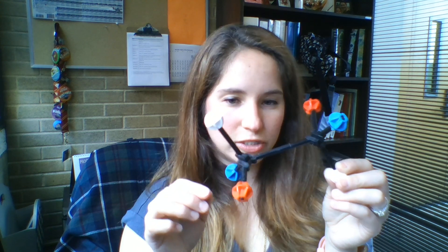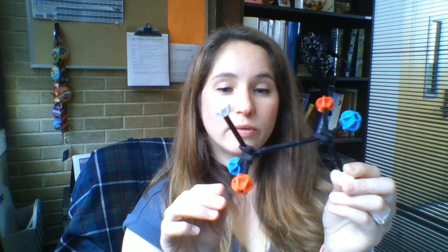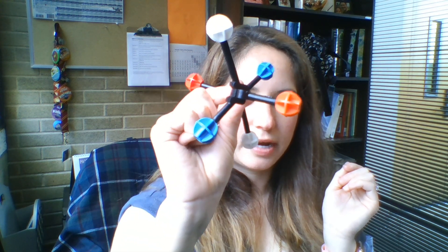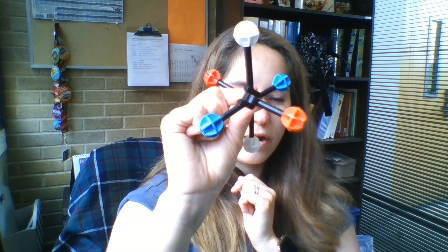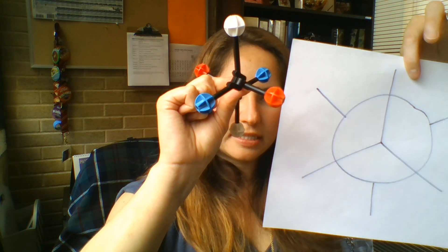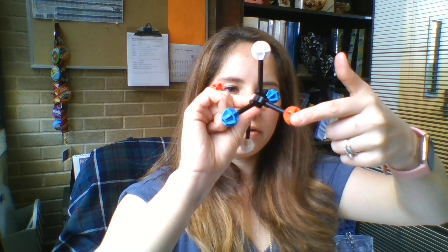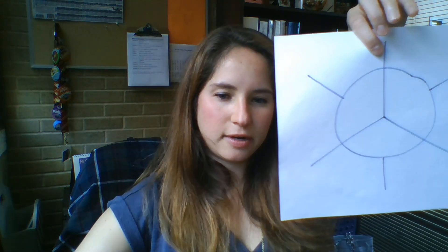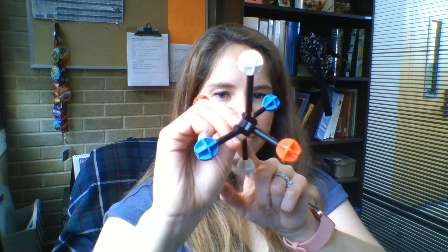This is the staggered conformation — the type we're used to drawing with all the zigzags. So if we're looking at ethane in this staggered conformation and I want to draw a Newman projection, I'm going to pretend I'm looking down the carbon-carbon bond. That's going to give me this image — this is what our Newman projection looks like when drawn in the staggered conformation. The sticks in the front represent the white, red, and blue hydrogens. The ones in the back represent the hydrogens on the carbon behind the leading carbon.